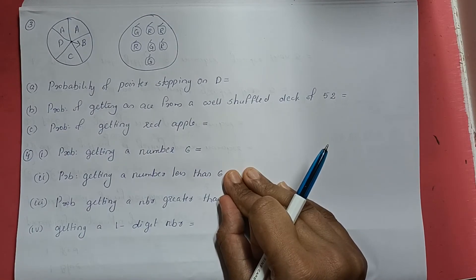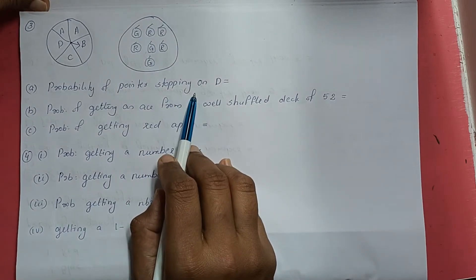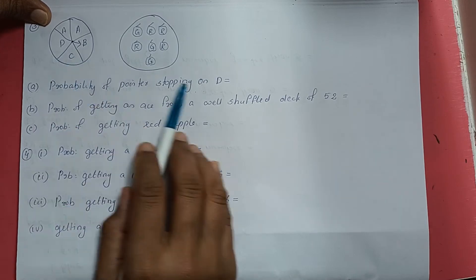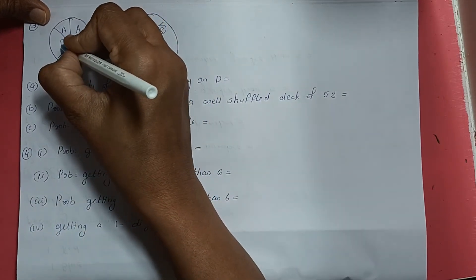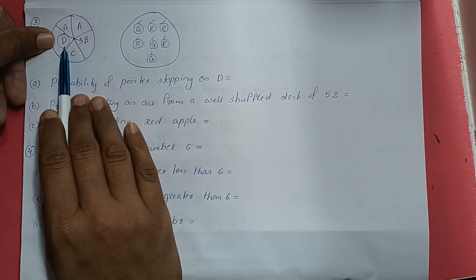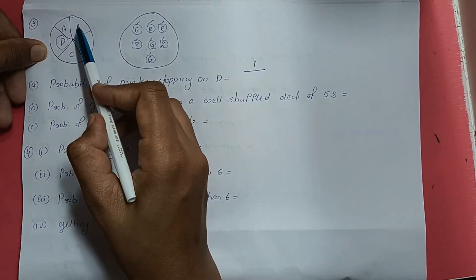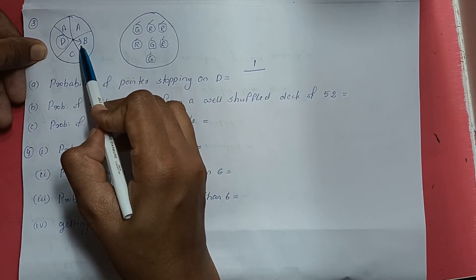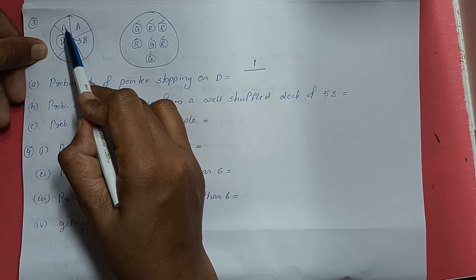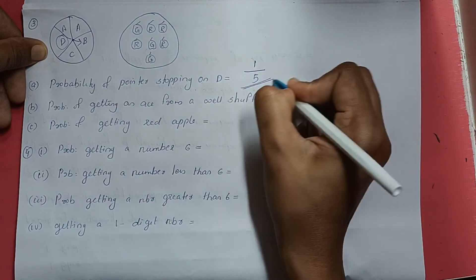Question number 3: Find the probability of the pointer stopping on D. This is from question number 1. The pointer stopping on D can happen only one time. So probability = 1 divided by total number of outcomes. The pointer can stop on A two times, B, C, and D — that is 1, 2, 3, 4, 5 total. So the probability is 1 by 5.